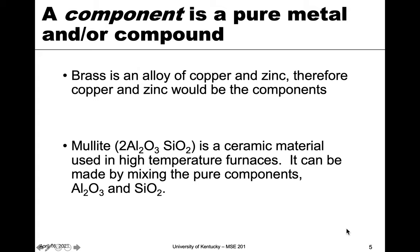Let's start with the idea of a component. A component of a phase diagram is either a pure metal or a compound, but it has to be a pure material. For example, brass is an alloy of copper and zinc, and therefore copper and zinc are both components of that system.